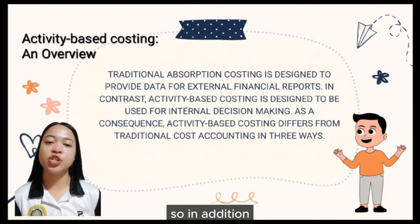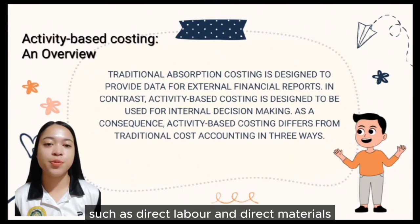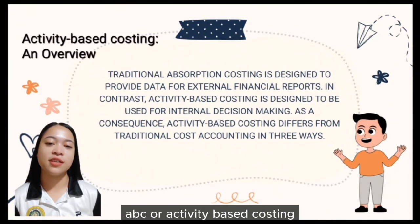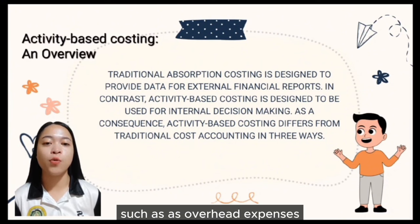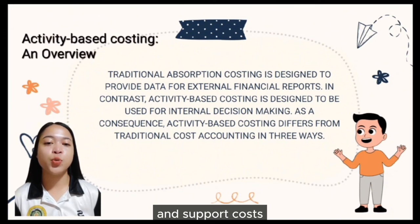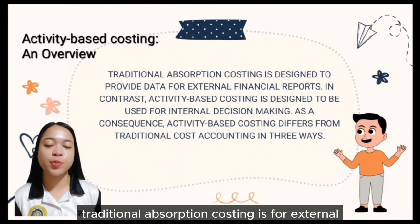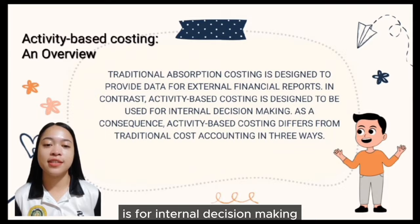Traditional absorption costing emphasizes direct costs, such as direct labor and direct materials. On the other hand, ABC or Activity-Based Costing emphasizes indirect costs, such as overhead expenses and support costs. In short, traditional absorption costing is for external financial reports and Activity-Based Costing is for internal decision-making.